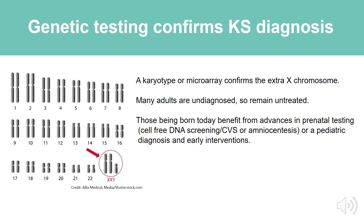Genetic testing confirms the KS diagnosis. A karyotype or microarray confirms the extra X chromosome — typically it's one extra chromosome, meaning 47,XXY will be the karyotype. Many adults are underdiagnosed and remain untreated. Those being born today have a higher chance of diagnosis because of more common genetic tests. A lot of women choose to have cell-free DNA screening, which is very affordable and non-invasive, and as a screening test can actually help detect a fetus with KS.